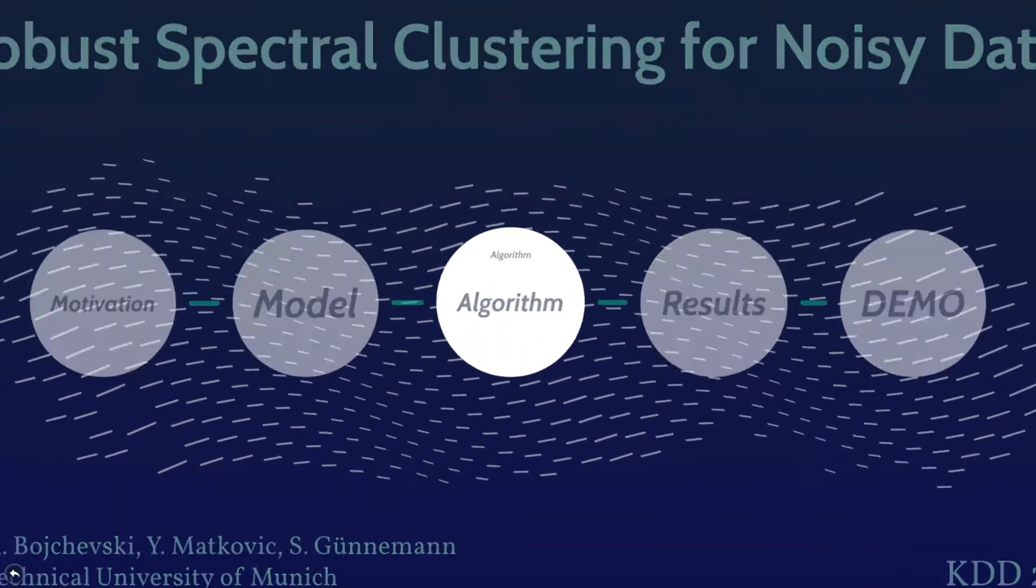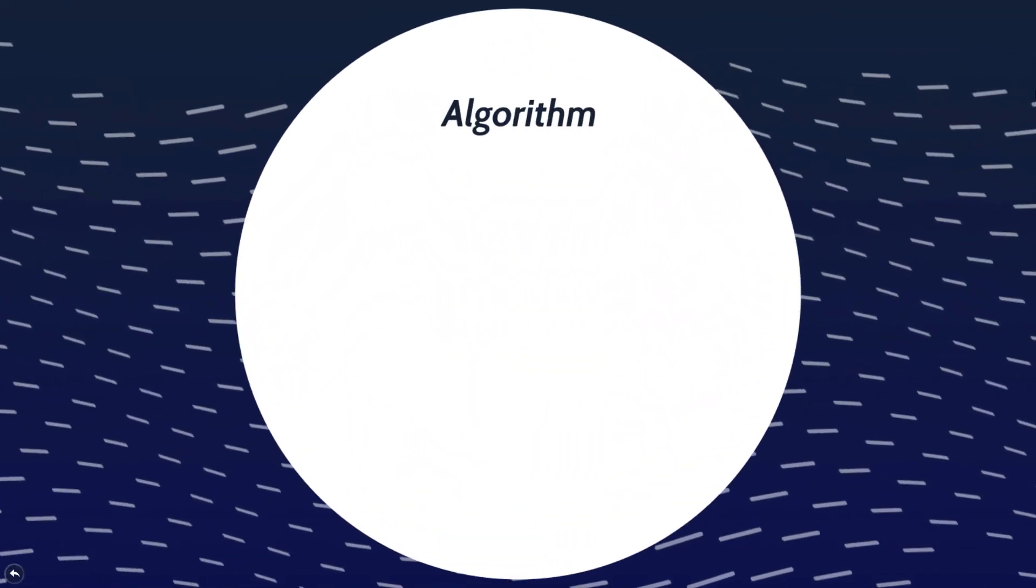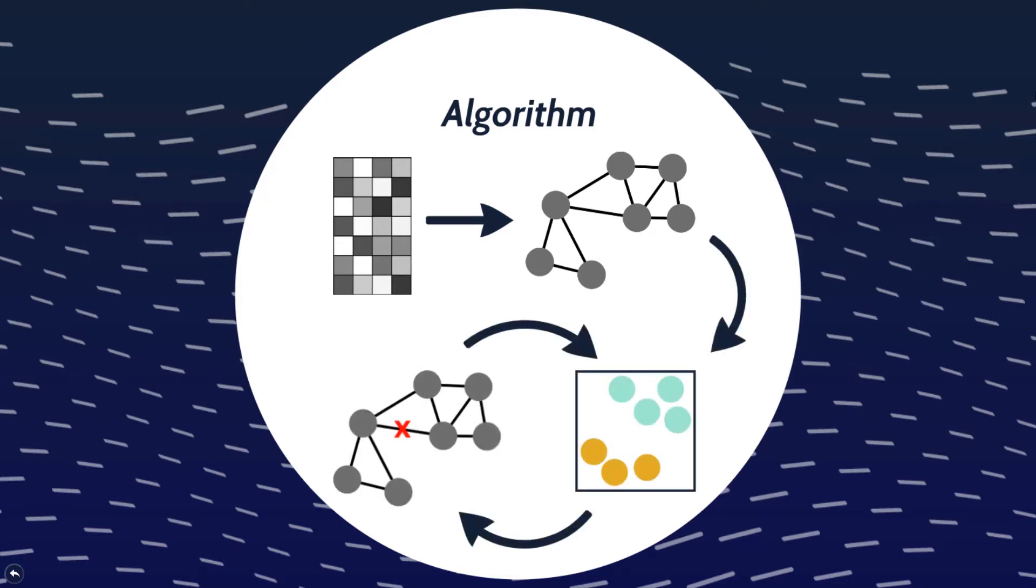Algorithmically, we solve this problem by an alternating optimization procedure that combines principles of eigenvalue perturbation with the multidimensional knapsack problem. Given the similarity graph extracted from the input data, we optimize the embedding and the detected corruptions alternatingly until convergence.